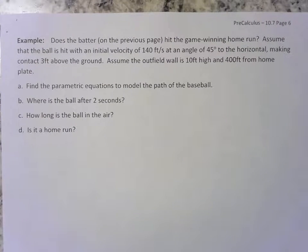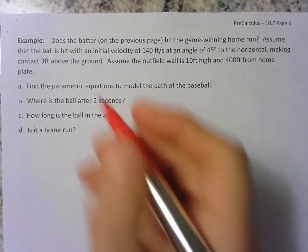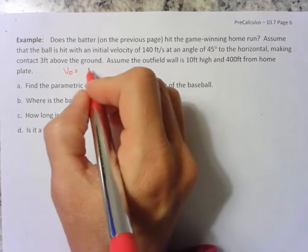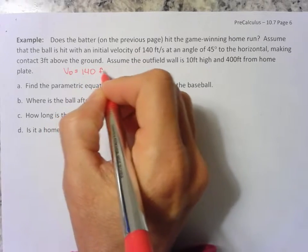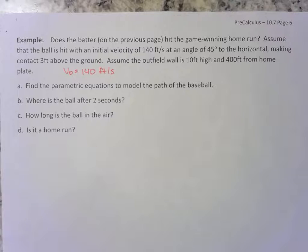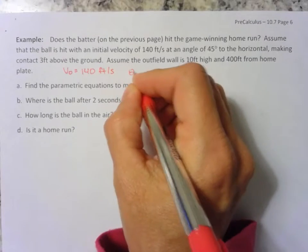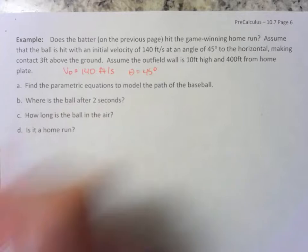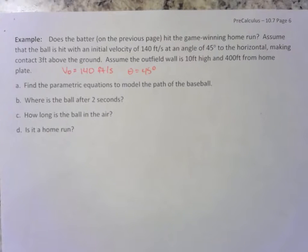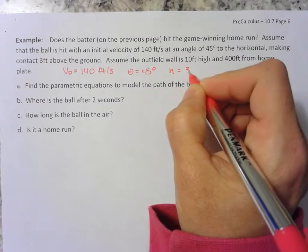Does the batter on the previous page hit the game-winning home run? Assume the ball is hit, and we said that originally in that previous page. The ball is hit with an initial velocity of 140 feet per second. So we know that our v-naught, our initial velocity, is 140 feet per second. We're at an angle of 45 degrees to the horizontal. So theta is 45 degrees. And making contact three feet above the ground. So the initial height is going to be 3 feet.